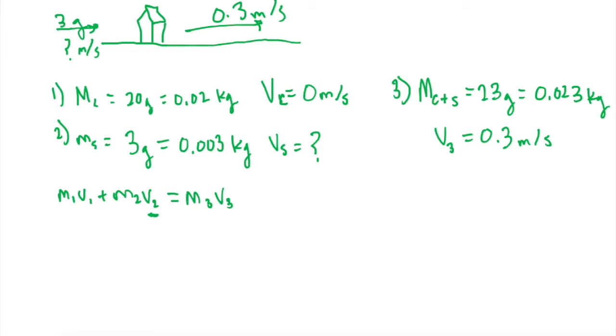Let's isolate V2. We'll subtract M1 V1 and divide by M2. So V2 equals M3 V3 minus M1 V1 all over M2.